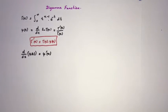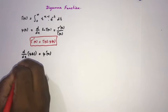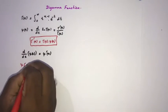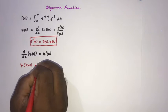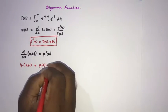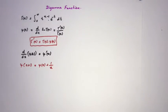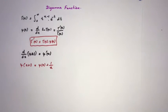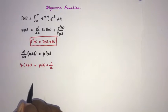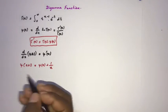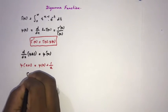Now I am going to prove the identity: ψ(x+1) = ψ(x) + 1/x. This is very important because I also use this identity to evaluate many integrals. To prove it, we use the well-known gamma function identity: Γ(x+1) = x · Γ(x).